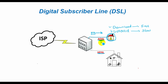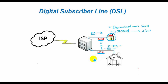In contrast to ADSL, HDSL provides a bidirectional high data rate service that can accommodate services such as video conferencing that require high data rates in both directions. A variant of HDSL is Very High-rate Digital Subscriber Line, or VHDSL, which provides an HDSL service at very high data transfer rates.